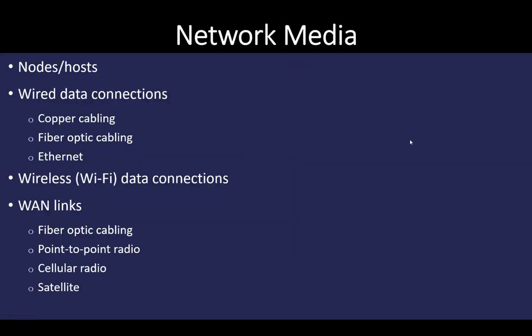We're going to use the term network media to describe what connects computers together. There are three basic types of media: copper cabling, which is your standard twisted pair or ethernet cable; fiber optic cabling, which carries light; and we're going to consider Wi-Fi or radio as a type of media as well.